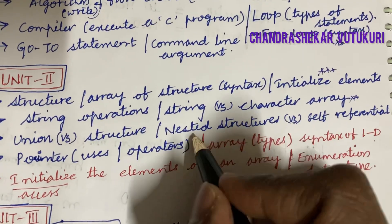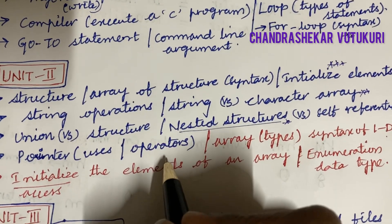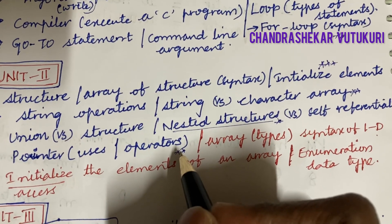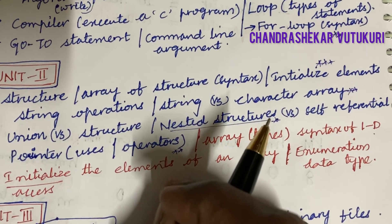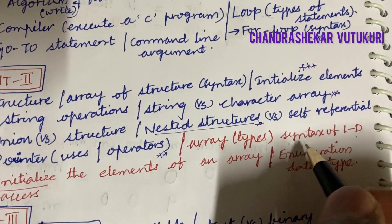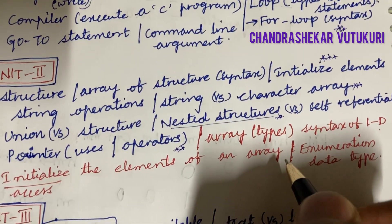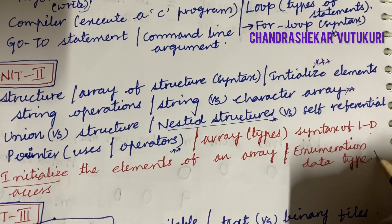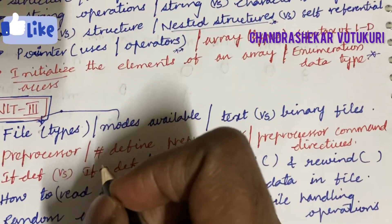String versus character array, as well as nested structure versus self-referential structure, may also be top questions. Define pointer and their uses, and the operators of pointers, may also appear in the question paper. Arrays and their types, the syntax of 1D arrays, initializing and accessing elements of an array, and enumeration data types — these are all very important short questions and concepts for PPS under Unit 2.